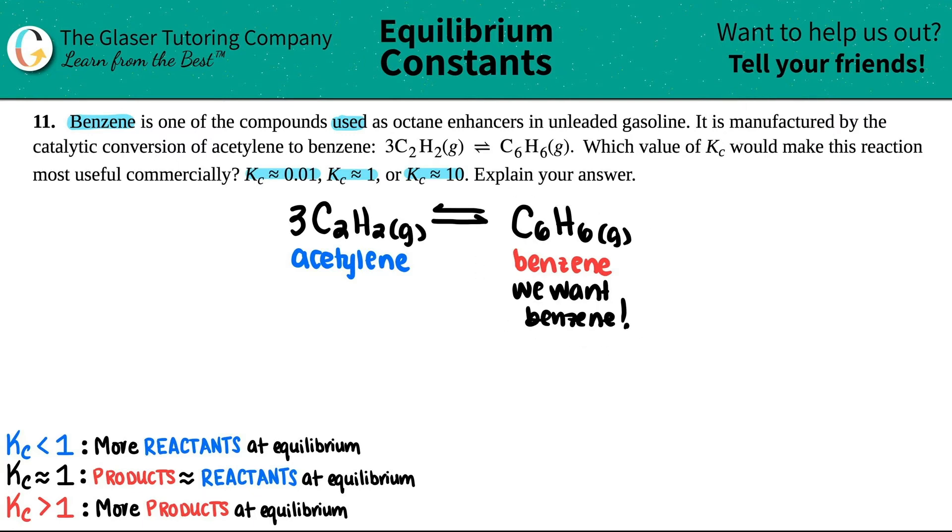Now we just need to figure out which value of Kc would be the most useful. Well, if we want the benzene, that's what we're trying to manufacture. We want to basically lower our acetylene and increase the benzene. We don't want this backward reaction to happen. We want more benzene and less acetylene.